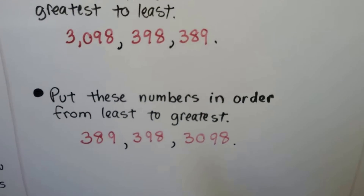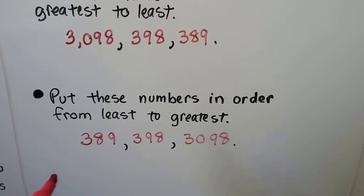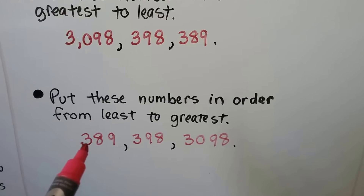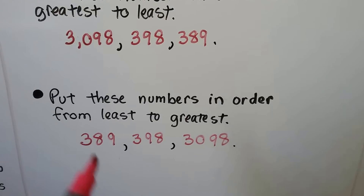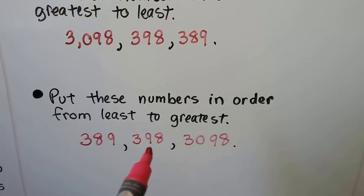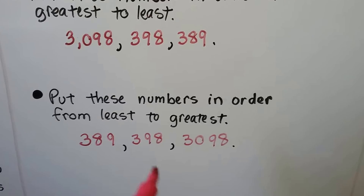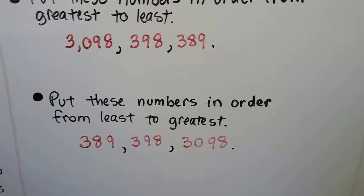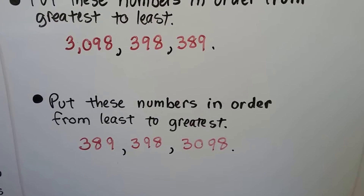We can also put the numbers in order from least to greatest. Now we have 389 in the front because it's the least, then 398, then 3098 because that's the greatest.